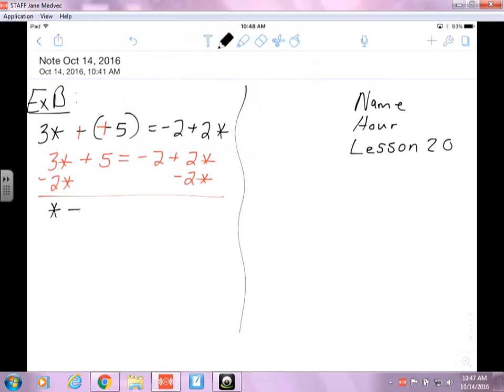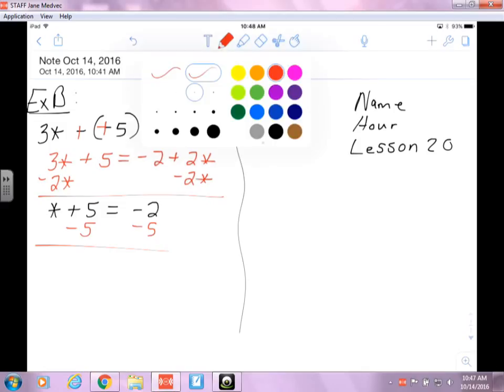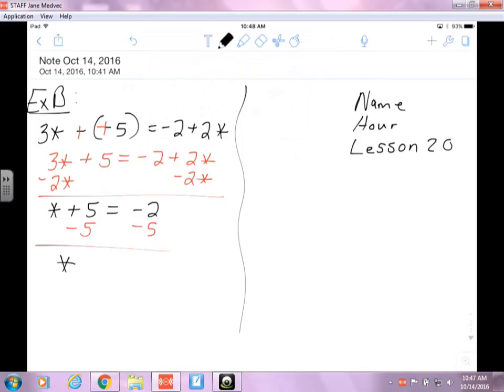And I end up with star plus five equals negative two. Then I'm going to get the star by itself, so I'm going to subtract my five, because again I want my star on one side and my numbers on the other. So star equals, and if I have a negative two and a negative five, I end up with a negative seven—remember it's like two green cubes. I do not have to define what x is since it is not in the problem and I don't need it for the check, however it is not wrong to do that if you wish to do that. Now I'm going to go ahead and do my check.